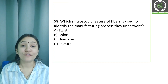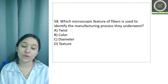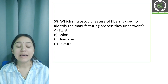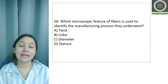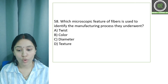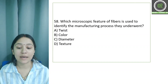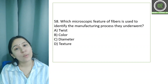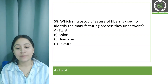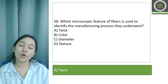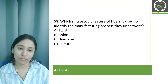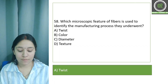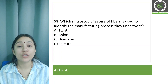Question number 58: Which microscopic feature of fiber is used to identify the manufacturing process it underwent? Options: twist, color, diameter, and texture. The correct answer is option A, twist. The direction of the twist also plays an important role in fiber identification.